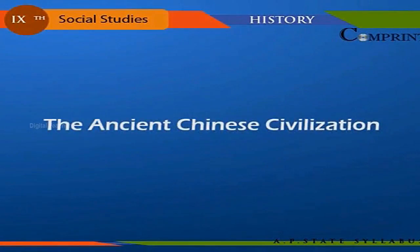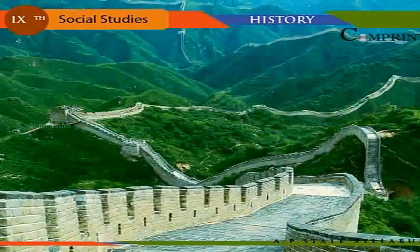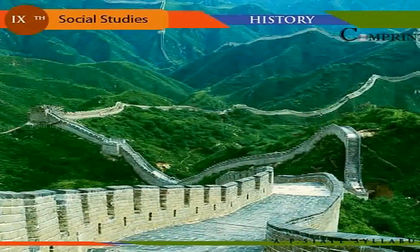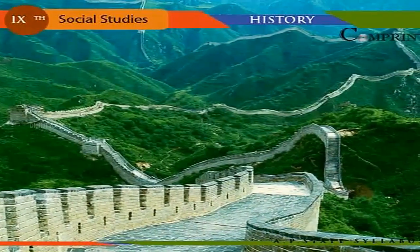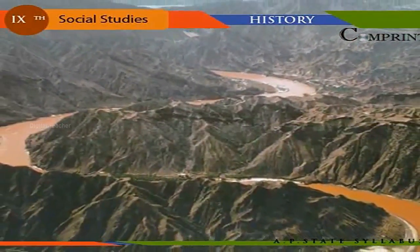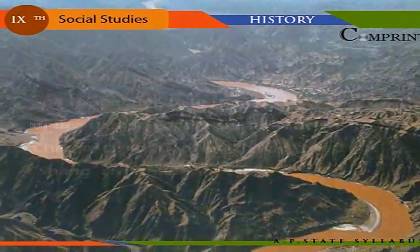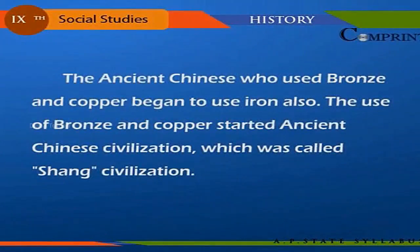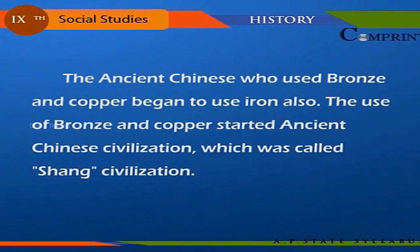Ancient Chinese Civilization: China is the biggest country in the east of the Asian continent. The people of this country suffered many miseries due to regular floods in the Huang He River. The ancient Chinese, who used bronze and copper, began to use iron as well. The use of bronze and copper started what was called the Shang civilization, which began roughly around 1850 BC.